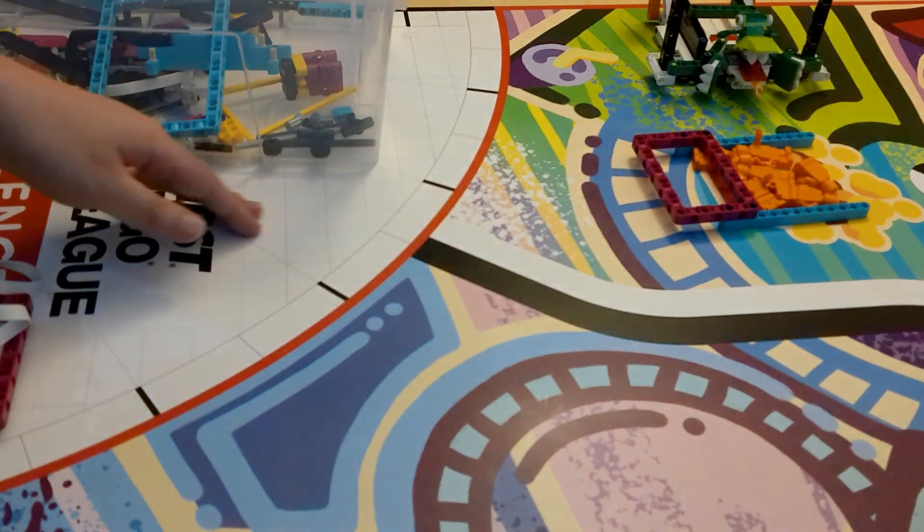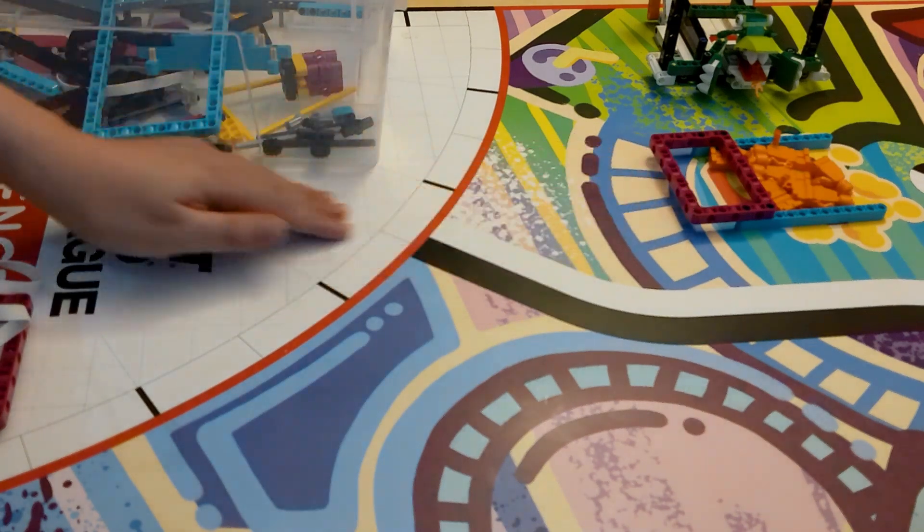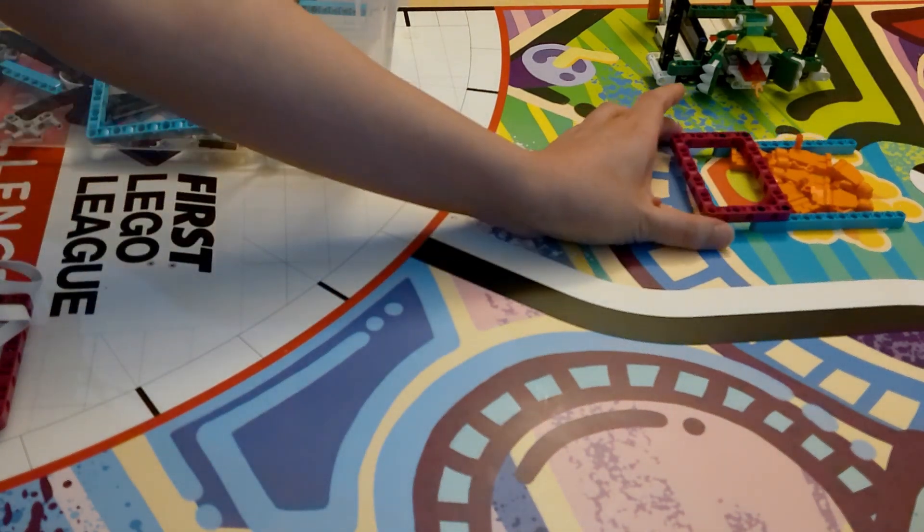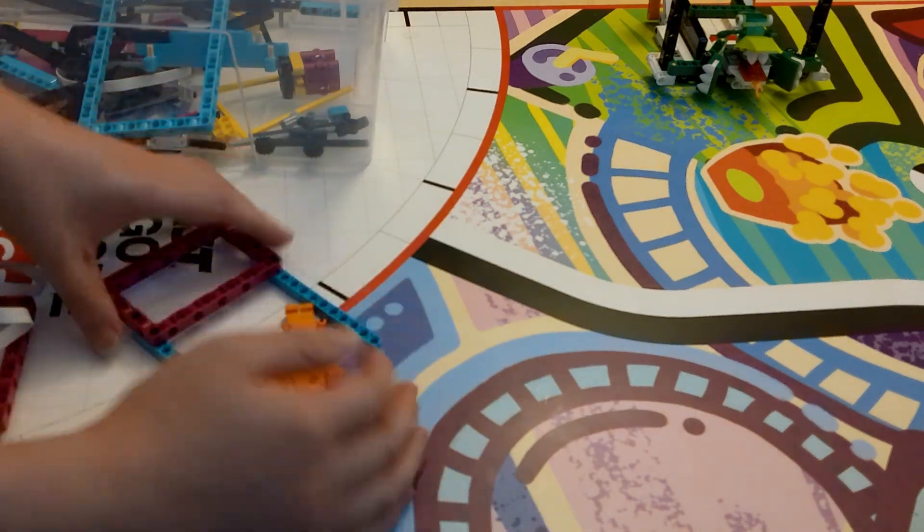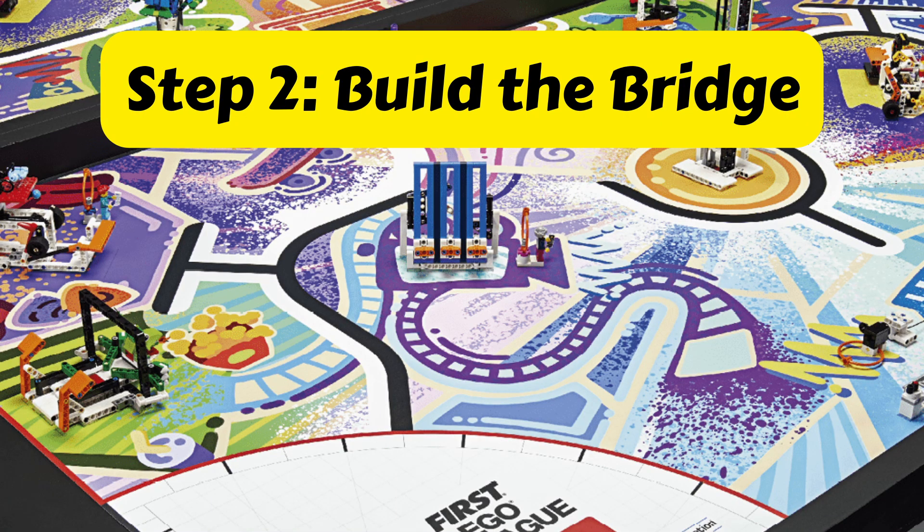Manipulators don't have to be complicated. This one only used seven parts in total. But we now need to find a way to attach this to the robot. The bridge is the connection between the robot and the manipulator. So let's build a bridge, that way the robot can actually use it.